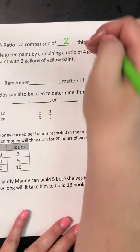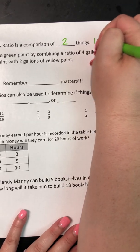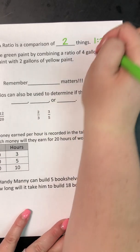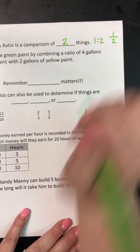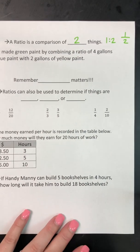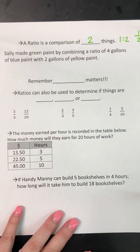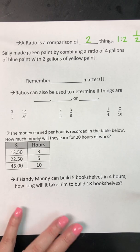Sometimes you might see a ratio written like this, and sometimes you might see it written like a fraction. There are lots of different ways you might see your ratios. Let's look at the first example.